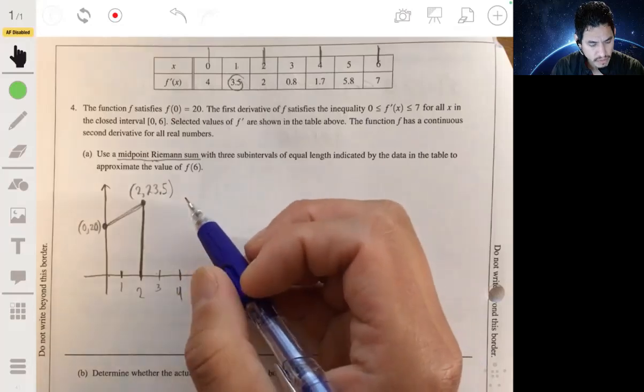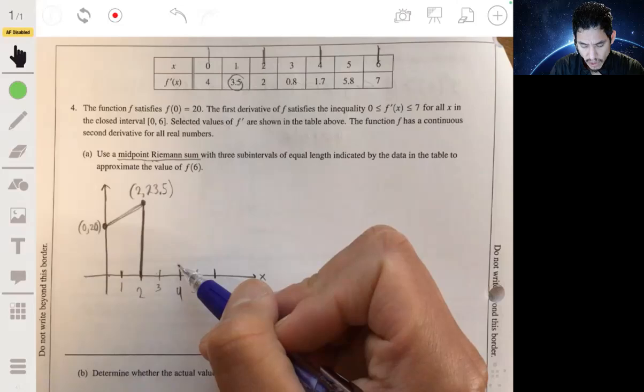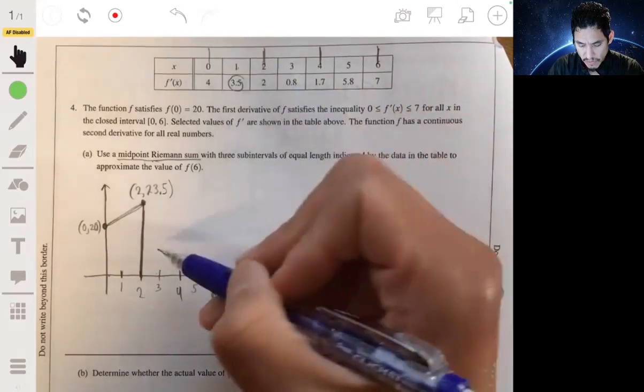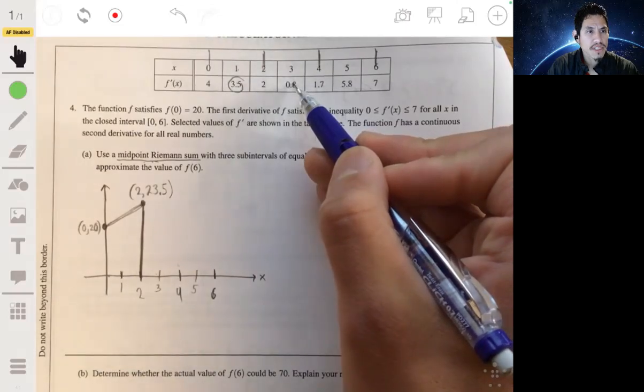Now, going from there, we can look at the same idea on the interval from 2 to 4 and use this rate of change at 3, where it says 0.8.